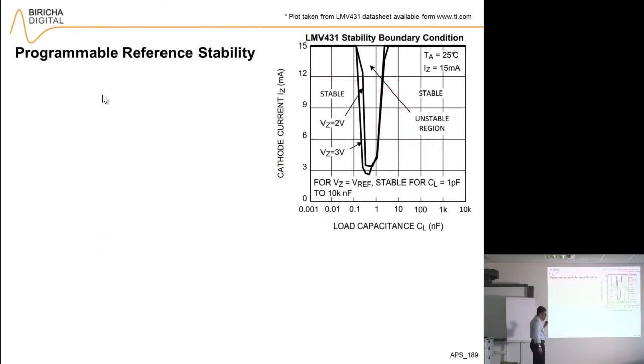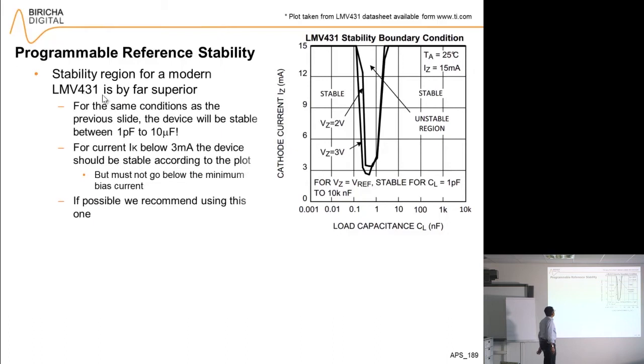The one that seems to have the best stability region and best robustness at the same time is LMV431, again available from TI. The stability boundary shown in the datasheet is like so. For this device, it's actually stable from 1 picofarad to 10 microfarad for the same conditions. If the current is below 3 milliamps, then it should be stable all the time, provided that we don't go below the minimum bias current of the device, which is only 100 microamps, which is great.